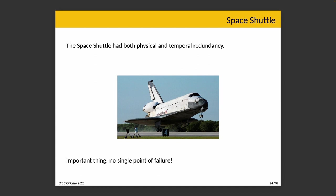The space shuttle had five computers — normally only four were used in a majority vote system. In such a system, if one fails, it gets outvoted by the others: three say the answer is option C and one says something different — you know the disagreeing one is wrong. If two systems fail in different ways and two correct systems win the vote, that's fine. But if two systems fail in the same way and there's a tie, the fifth computer is activated as a tiebreaker. The important thing is that such a system has no single point of failure. A system which does have a single point of failure is by definition vulnerable to total failure if that one component is out of action.